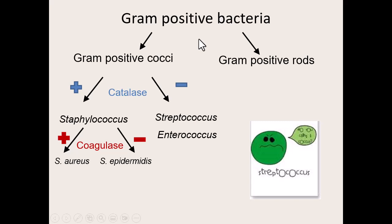As we talk about all the bacteria that are gram-positive — everything in this PowerPoint — they're all gram-positive bacteria. So if we gram stain them, they're going to be that nice purple color. How we organize all the gram-positive bacteria is first by shape: whether they are gram-positive and cocci-shaped, or gram-positive and bacilli or rod-shaped.